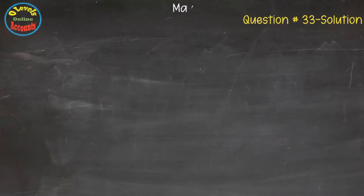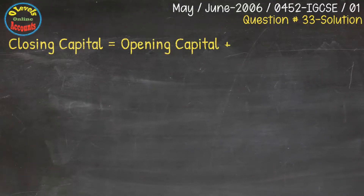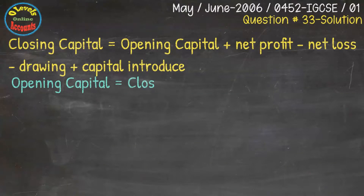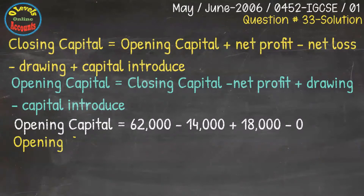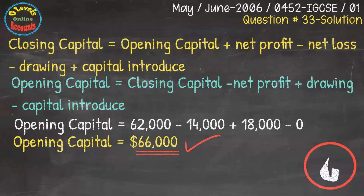We have question number 33 from May/June 2006, 0452 IGCSE Paper 1. In this question, we have to find out the opening capital. We will use the equation: closing capital equals opening capital plus profit minus loss minus drawings plus capital introduced. By putting all the given values and calculating for opening capital, we get the value 66,000. This is the correct answer, available with the C option in the question.